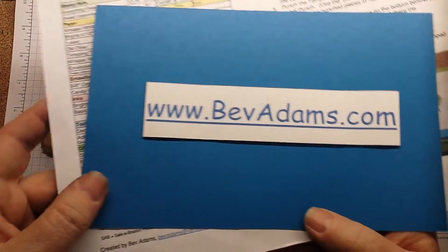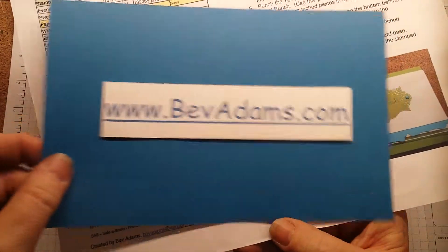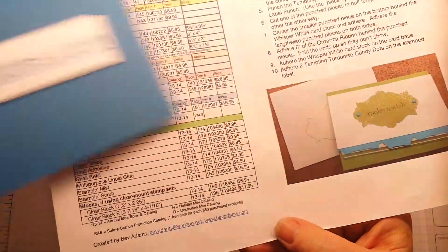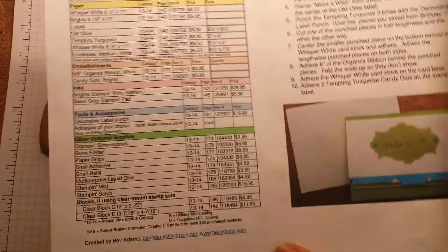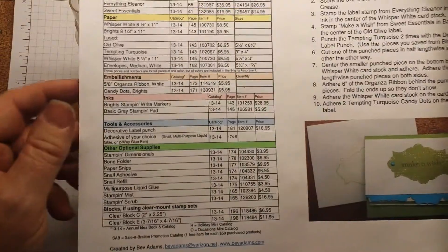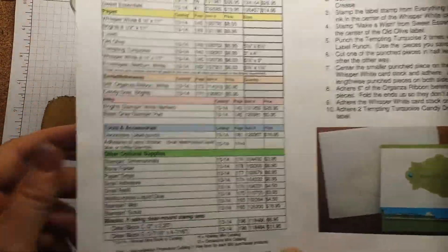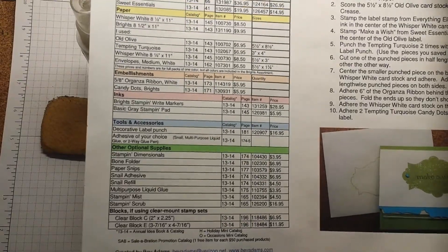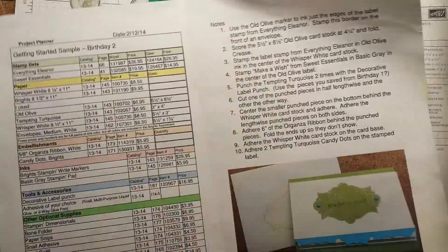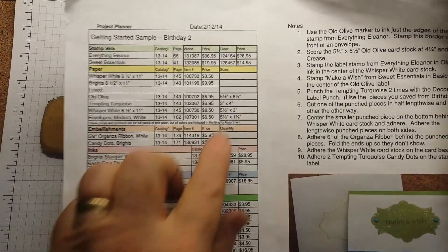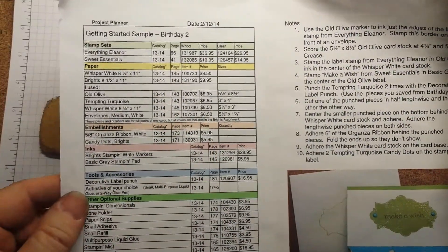On my website, BevAdams.com, I have card ideas. On every card idea, almost all of them, I have a link to download a free printable supply list with step-by-step directions. And they all have the card sizes, paper sizes, and so forth.